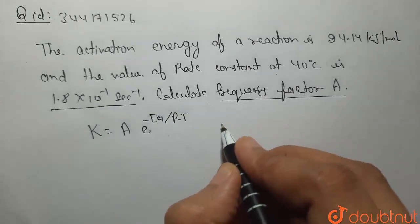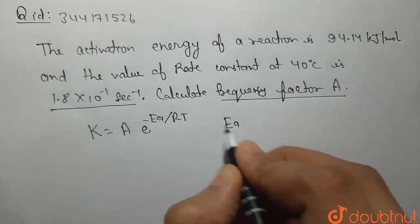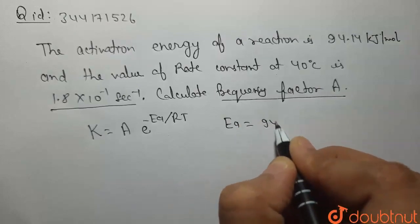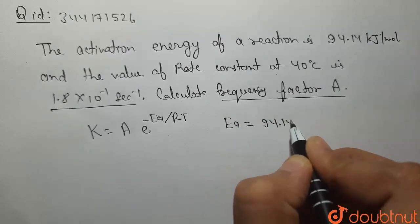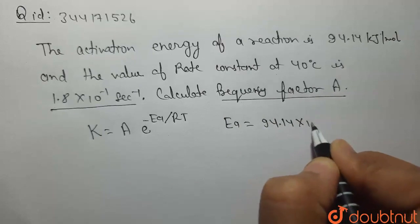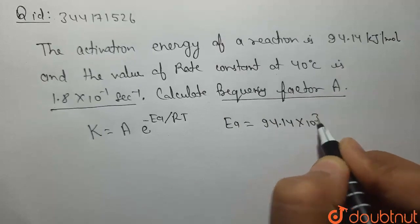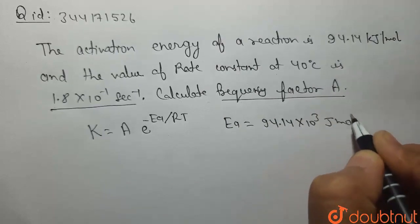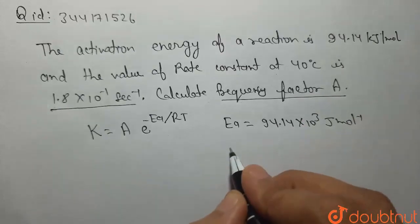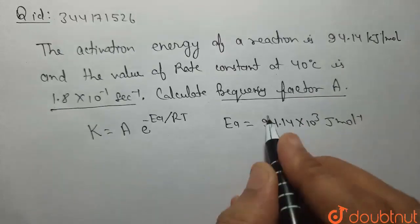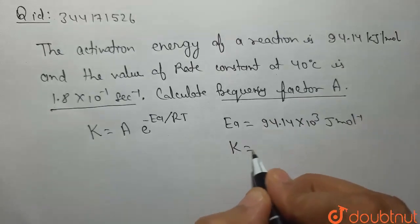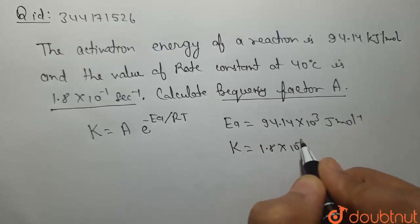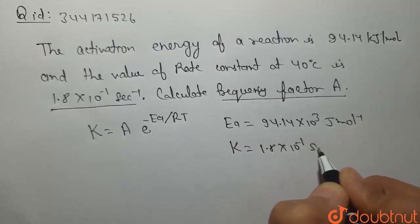इसमें given values क्या-क्या है? Activation energy given है — 94.14, इसको हम Joule में convert कर लेते हैं, तो हो जाएगा 94.14 × 10³ Joule per mole. और rate constant की value given है 1.8 × 10⁻¹ second inverse.